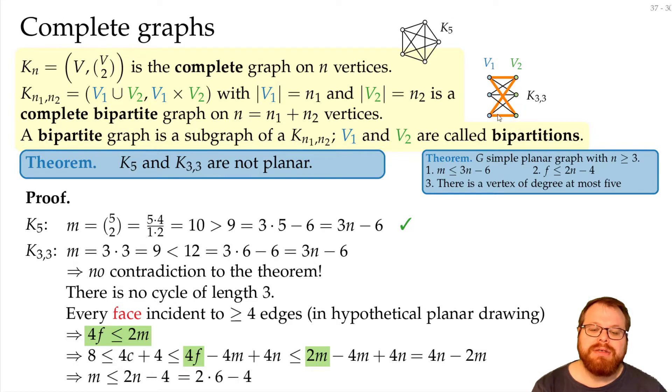If we plug this in here, then this tells us that this graph can have at most 8 edges to still be planar, but it has 9, so it's not a planar graph.